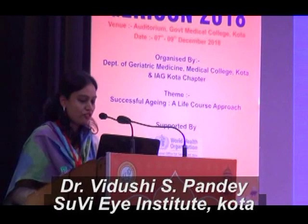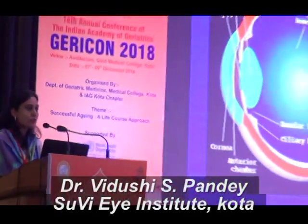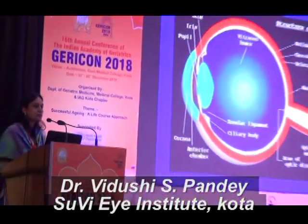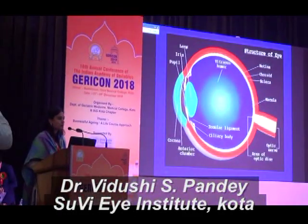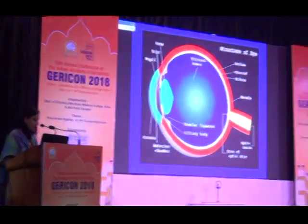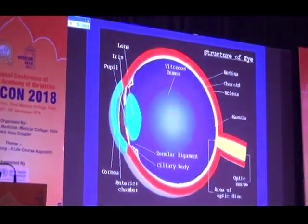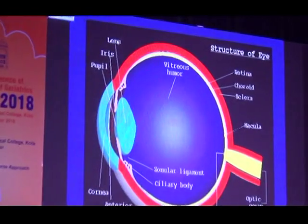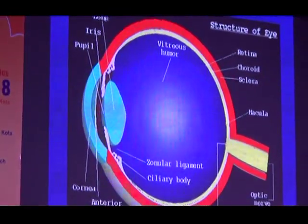So, prevention of blindness in the context of the geriatric population. I have no financial disclosures. Since it is a mixed audience, a bit of a revision: this is the anatomy of the eye, and essentially we deal with diseases of the lens, the cornea, and the retina.